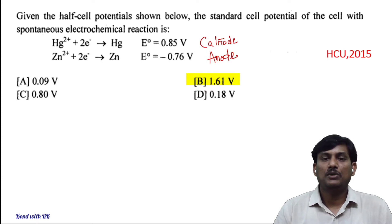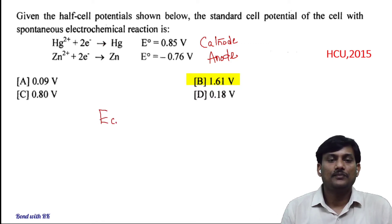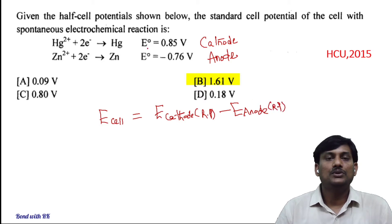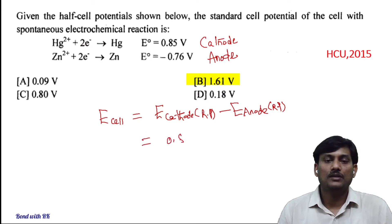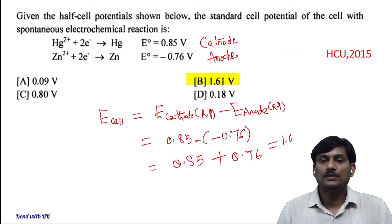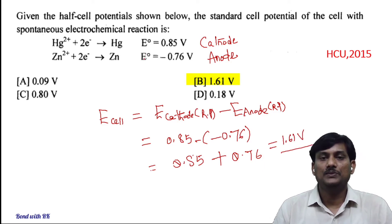So, when you construct this type of cell, the cell reaction will be spontaneous. We know the E°cell is the difference of half-cell potential — that is, reduction potential of cathode minus reduction potential of anode. Here, both the reduction potentials are given: 0.85 minus 0.76, which gives 1.61. This is the cell potential value. So, the correct option is 2.